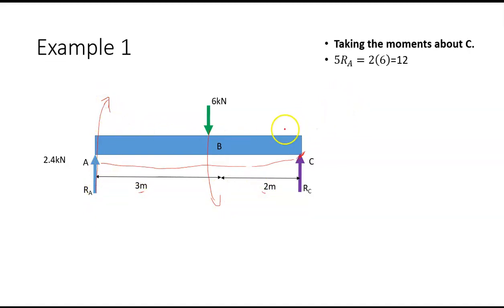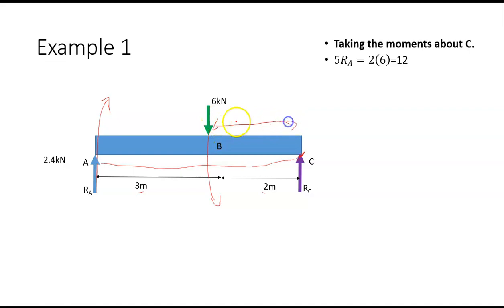The clockwise moment is five times Ra — that's three meters plus two meters — so five times Ra. The anti-clockwise moment is two meters by six, which is 12. Solving that gives Ra equal to 2.4 kilonewtons.